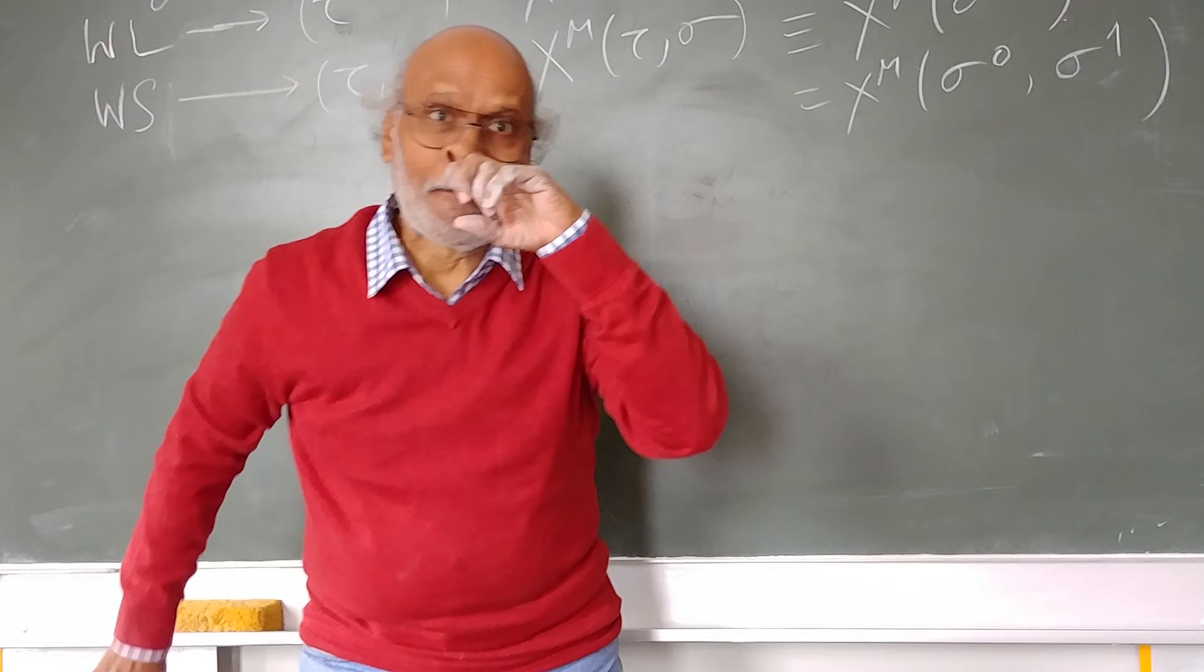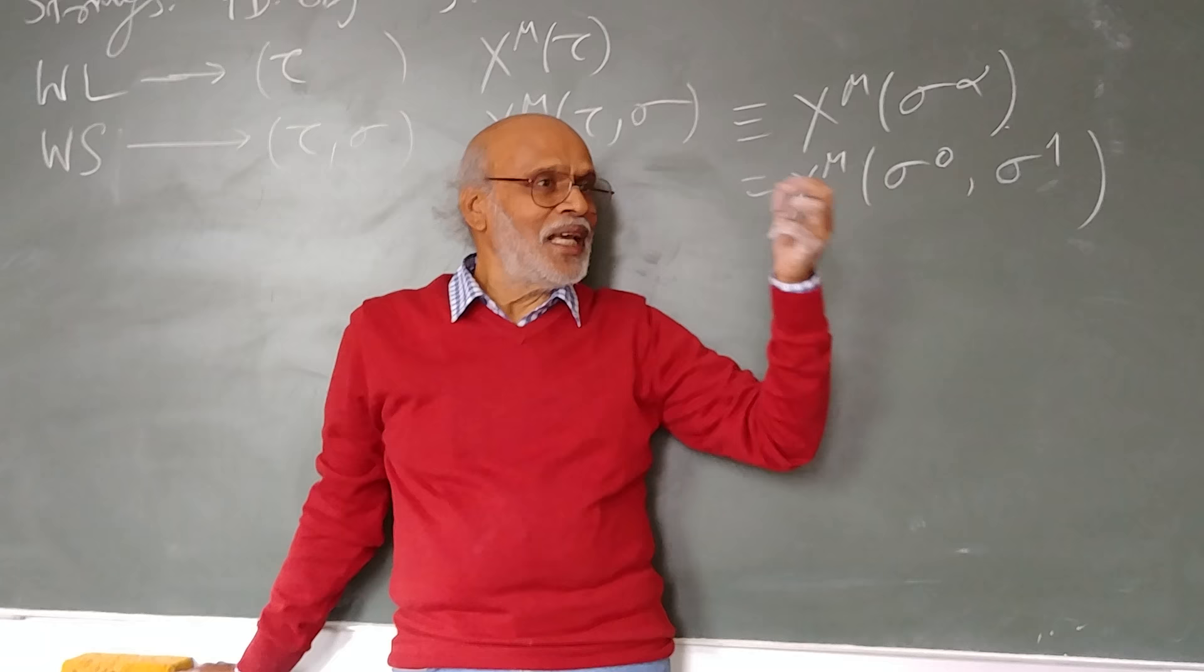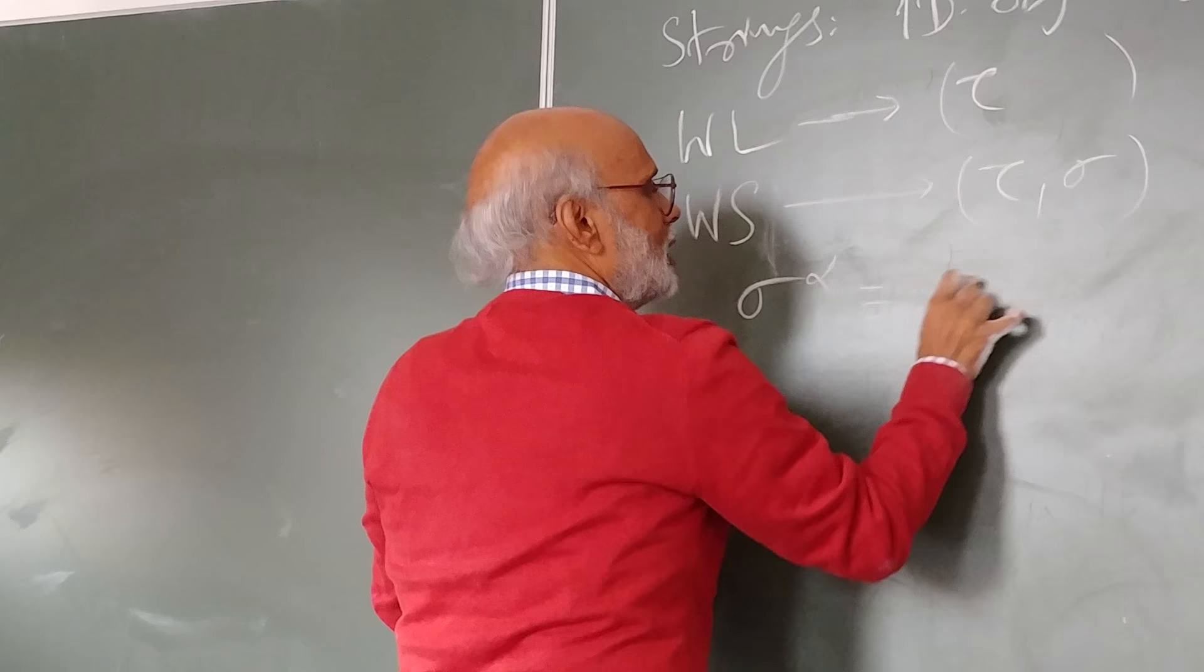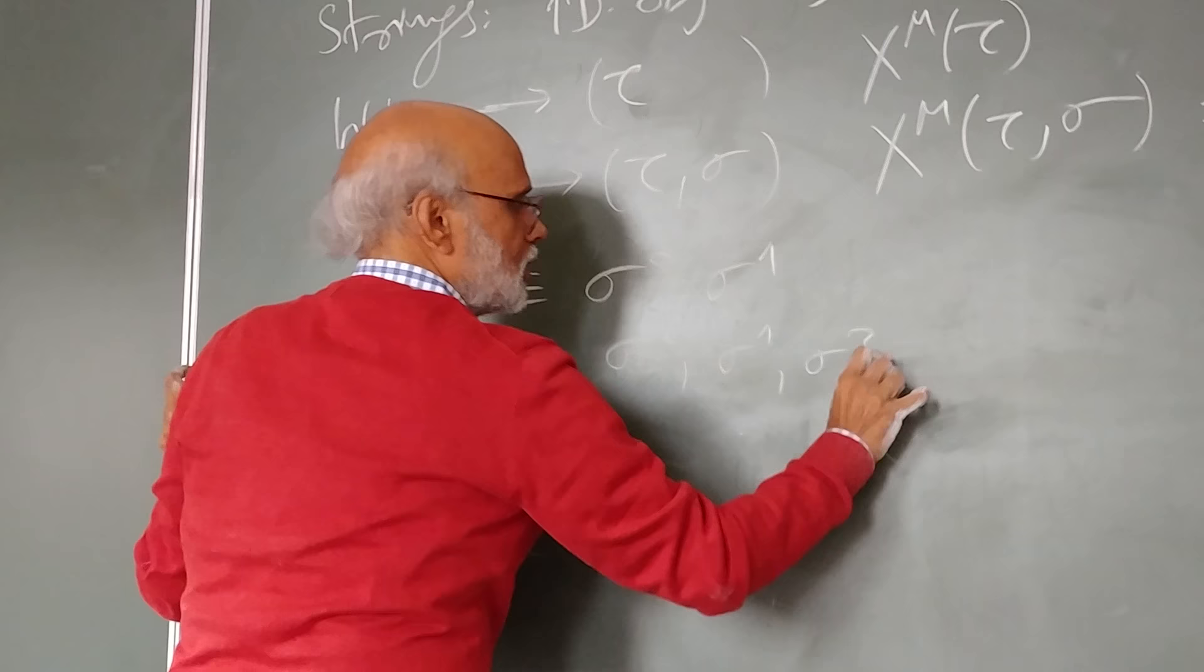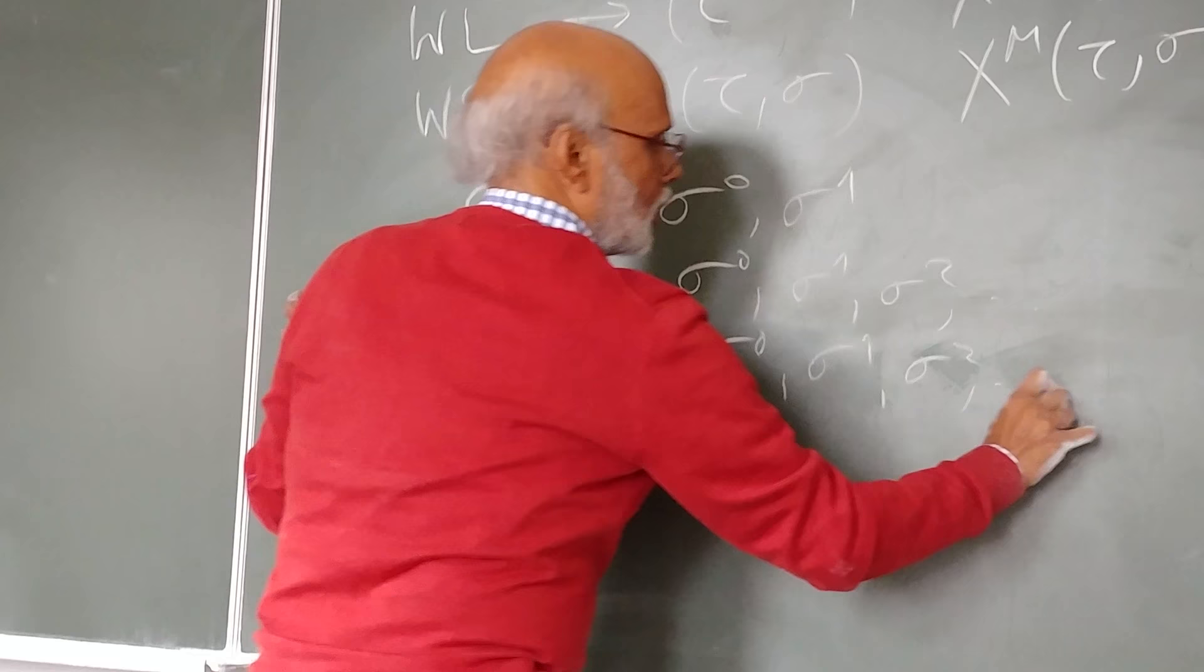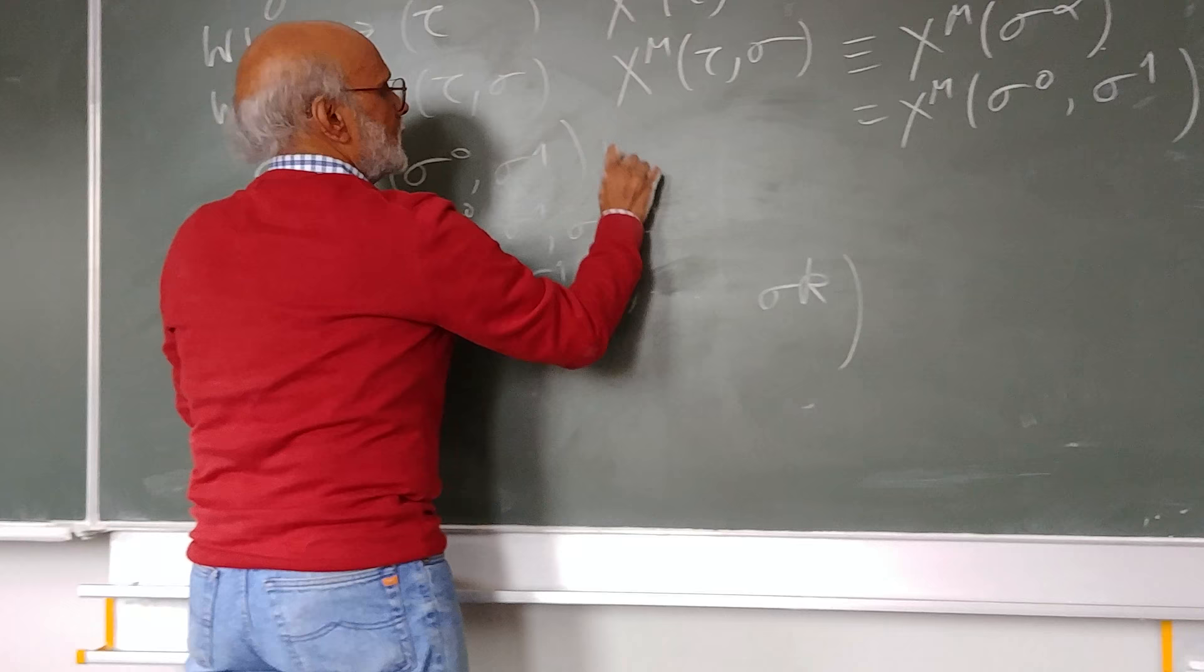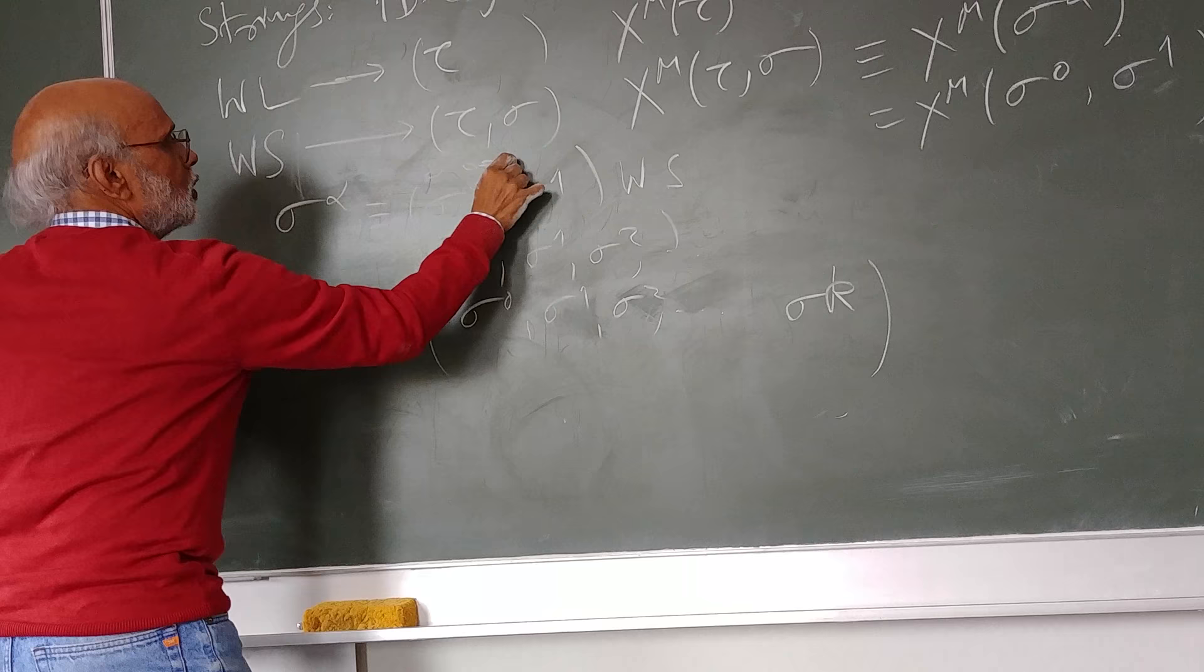There is a very important point here: this sigma^alpha is an alpha vector in the worldsheet space. Sigma^alpha = (sigma^0, sigma^1) or (sigma^0, sigma^1, sigma^2) or (sigma^0, sigma^1, ..., sigma^k). This is just worldsheet. For worldline, it was just sigma^0. Sigma^0 was tau.